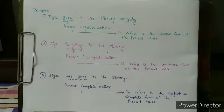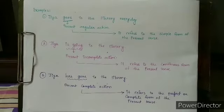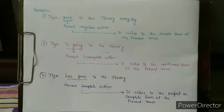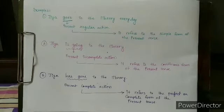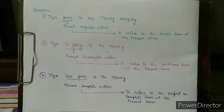Jia is going to the library. Here 'is going' is in present incomplete action — it refers to the continuous form of the present tense. Then, Jia has gone to the library. Here 'has gone' is in present complete action, as it refers to the perfect or complete form of the present tense.